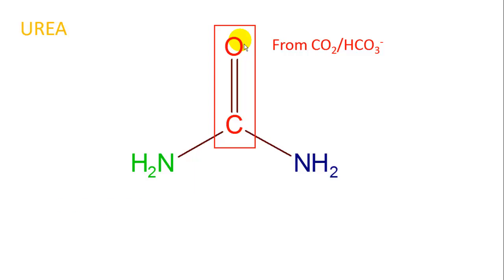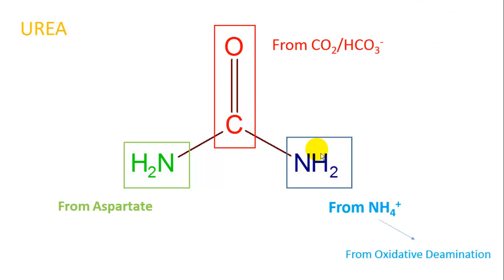The nitrogen shown in green is important because we are trying to remove amino groups to prevent hyperammonemia. This NH2 is donated from aspartate, the amino acid. High levels of amino acids signal high levels of glutamate and aspartate, which serve as primary reservoirs for alpha amino groups. The nitrogen shown in blue comes from the ammonium ion, which comes from oxidative deamination, usually through the enzyme glutamate dehydrogenase. Glutaminase can also contribute some ammonia. This process is intimately linked to amino acid levels in the body.